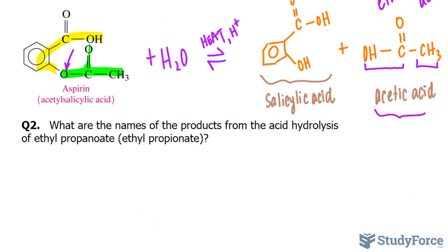Let's continue on with question two. What are the names of the products from the acid hydrolysis of ethyl propanoate? Let's begin by drawing out what ethyl propanoate looks like. As you can tell from the name, this is an ester.